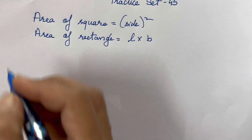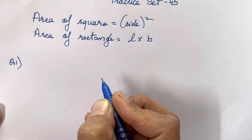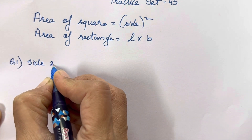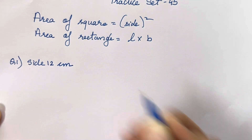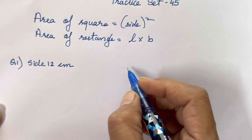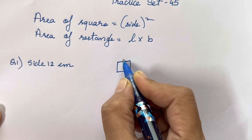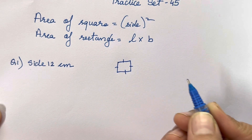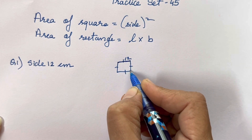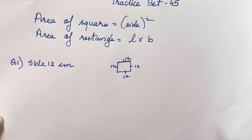Let's start with the first question: find the area of a square having side 12 centimeter. As we know, we only need one side for a square. Everyone knows the property of a square — all four sides are equal. So when we have 12 for one side, that means all the sides are going to be 12 centimeter.